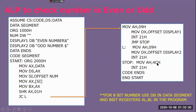At the 'stop' label, we load MOV AH, 09h and terminate the program. If the carry flag is set — meaning the number is odd — control transfers to label L. At label L, MOV AH, 09h is used to display the odd number message.